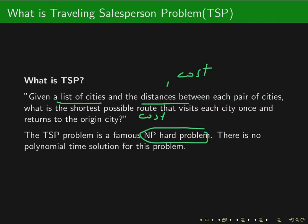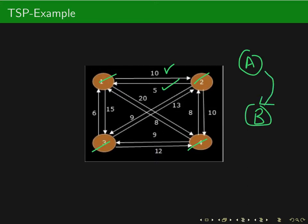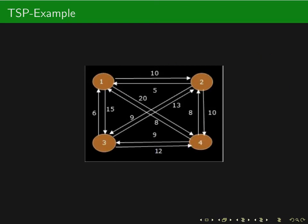Here is an example of a TSP problem. A graph is shown with four vertices — one, two, three, and four — representing cities. The costs for both directions are indicated, meaning the cost of going from one to two is ten and the cost of going from two to one is five. This is applicable in real scenarios: the flight charge from city A to city B may differ from the charge going from city B to city A, which is why we accommodate graphs having two different costs between the same vertices.